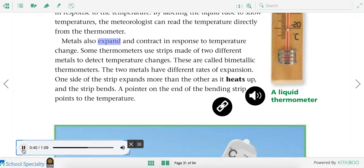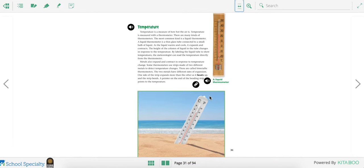Metals also expand and contract in response to temperature change. Some thermometers use strips made of two different metals to detect temperature changes. These are called bimetallic thermometers. The two metals have different rates of expansion. One side of the strip expands more than the other as it heats up, and the strip bends. A pointer on the end of the bending strip points to the temperature. So most thermometers that we see are like these two. They're liquid thermometers.